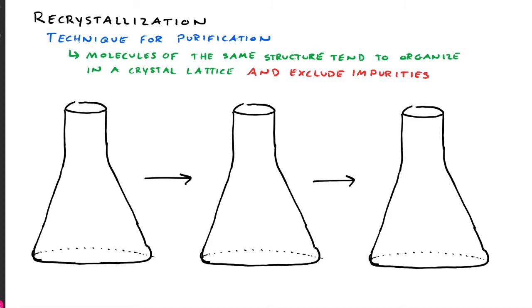So let's talk about how the recrystallization experiment works. On this Erlenmeyer flask illustration over here on the left, imagine that on the bottom here, you have just a powder of green material. This is just a powder, and that powder is almost certainly going to be in some micro-crystalline form, but they don't necessarily appear as crystals — they just appear as a fine powder. And then in that powder, we're going to have a little bit of red impurity. So that red material is going to be in a much lower proportion in terms of moles compared to the green material, but it is in there as an impurity, and we want to get rid of that red material.